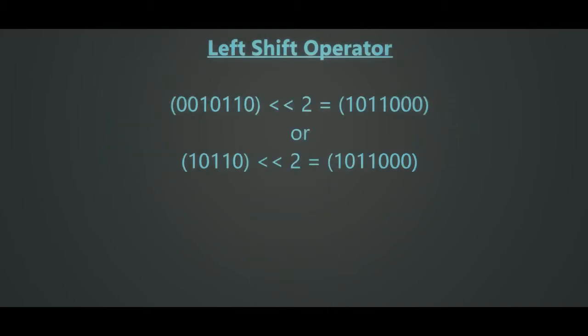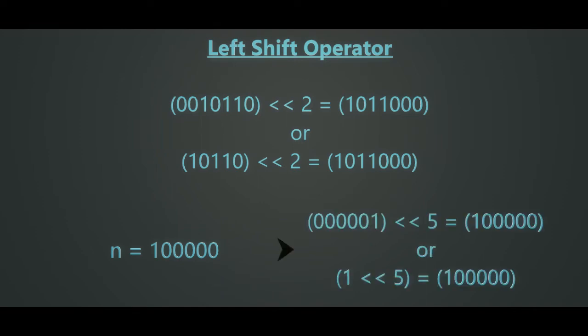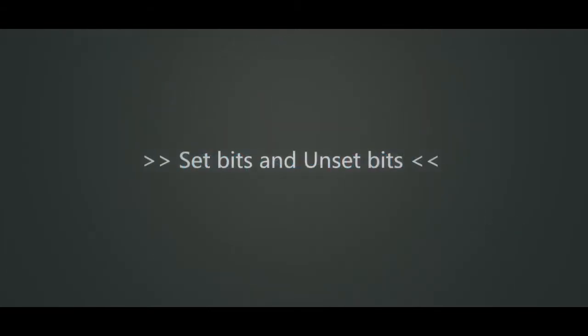One more operator is the left shift operator, which basically shifts the bits to the left side by some value V. For example, to get a number I will type the command 1 left shift 5, where the bits follow 0-based indexing. Looking at the binary representation of a number, we classify each bit as one of two types: if its value is 1, it is called a set bit, and if its value is 0, it is called a not-set bit, or an unset bit.